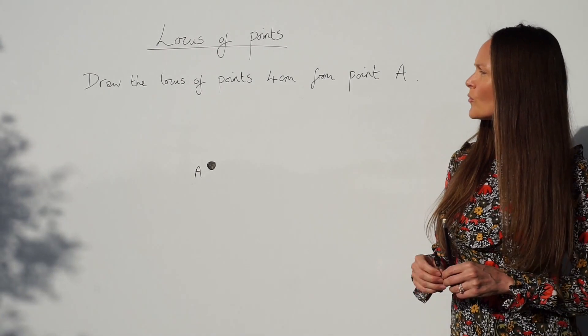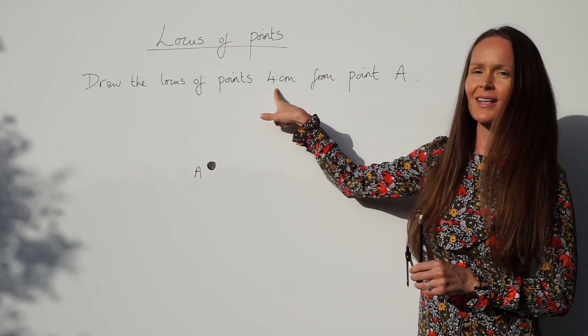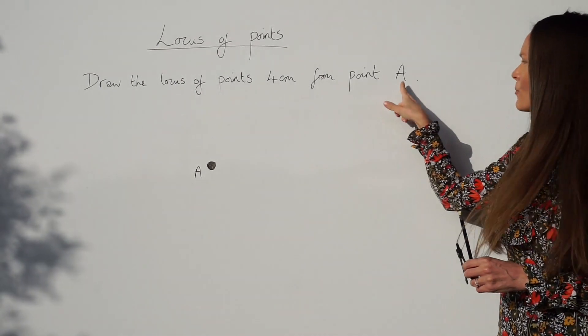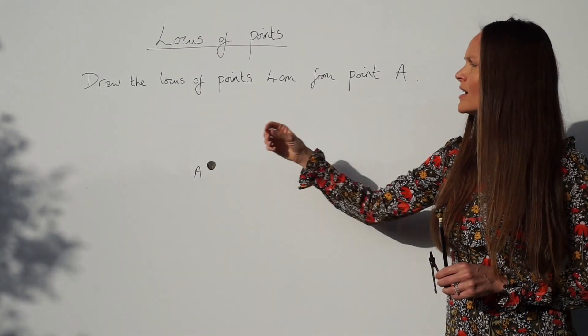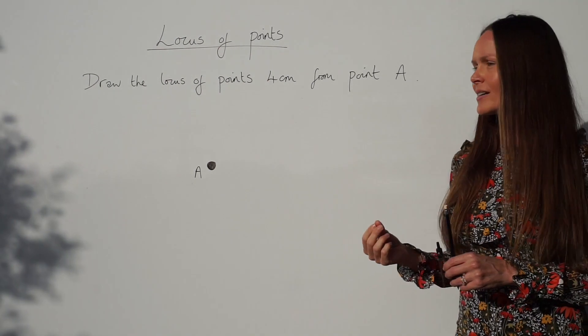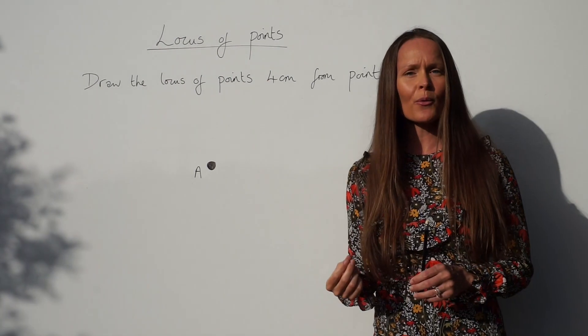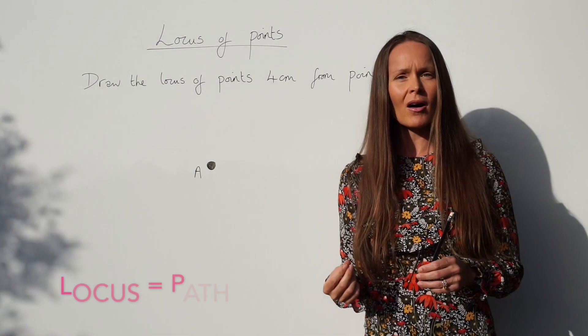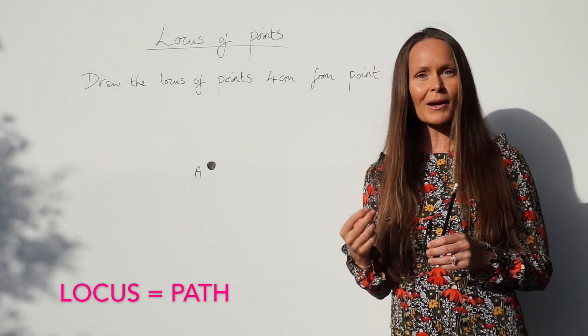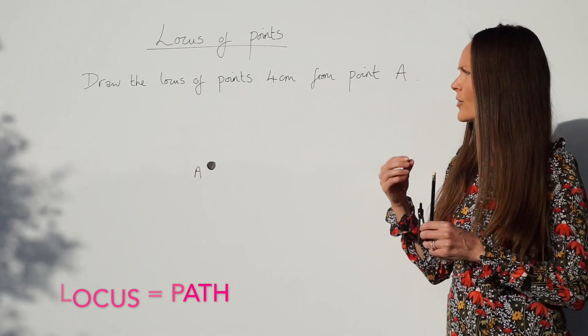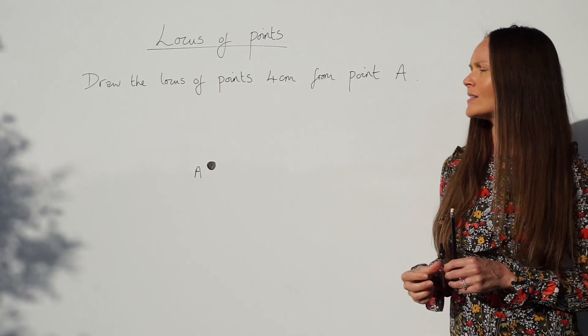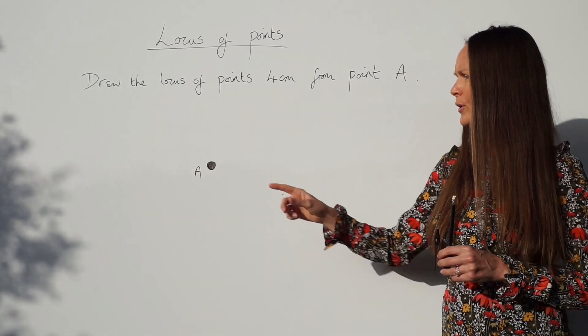In the first example it says: draw the locus of points four centimeters from point A. Locus is just another word for path, so we have to draw the path of points that are always four centimeters from point A.